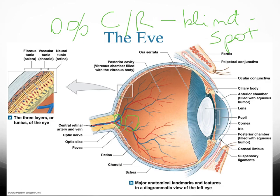Your optic disc has no cones or rods and is known as your blind spot. Whereas your fovea — if you have something you're looking at that's concentrating right on the fovea — is where you're able to see things best in color, because that's where you have the most concentration of cones.